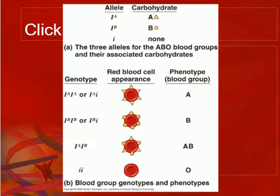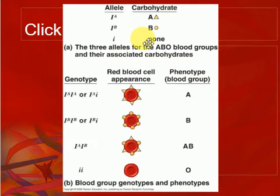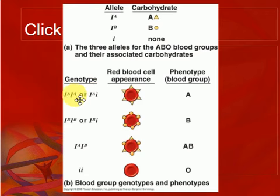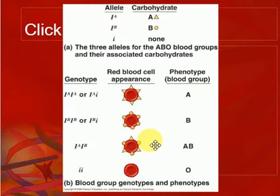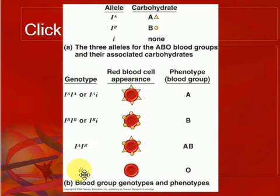When we look at the blood types, the A allele is going to make triangles, and the B allele is going to make bubbles. The lowercase i makes none. These are carbohydrate receptors on the outside of blood cells. If you've got the A allele, you've got triangles; if you've got the B allele, you've got bubbles; if you've got AB, you have both. They're not bubbly triangles or pointy bubbles — they're codominant, both capital letters being expressed. If you're homozygous recessive, you have no receptors on the outside of your blood cells.